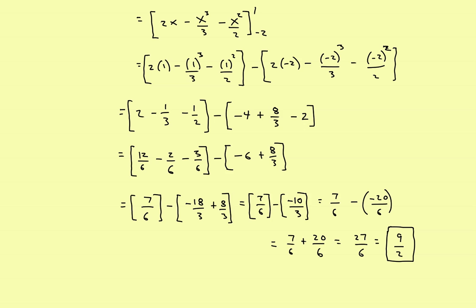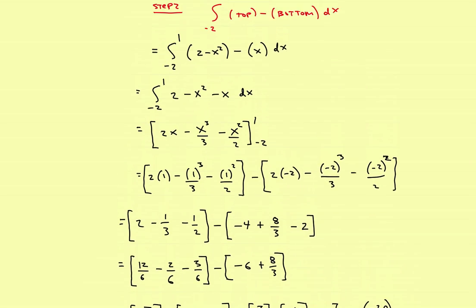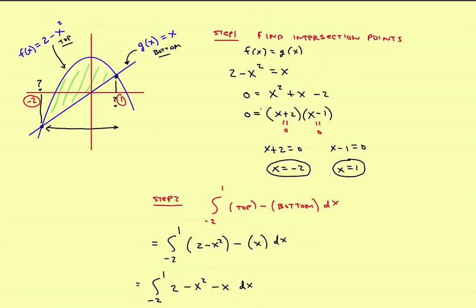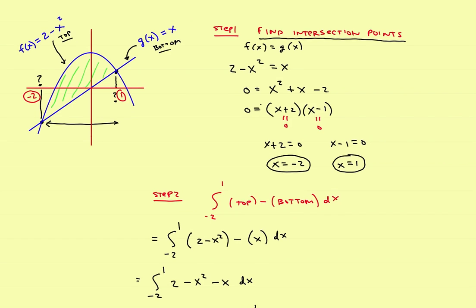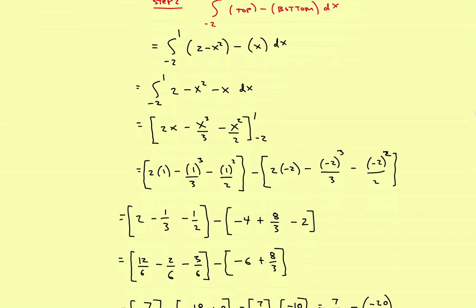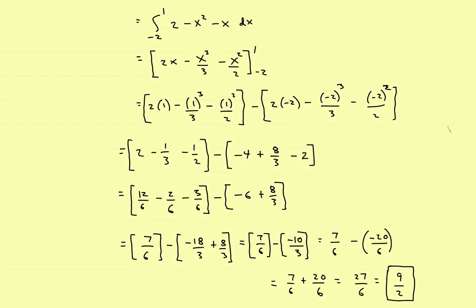The area between those two functions is nine halves — mostly just algebra to get there. To summarize: if the two functions are given without intersection points, step one is to set them equal and solve for x to get the limits. Step two is to integrate the top function minus the bottom function over that interval and work through the algebra.